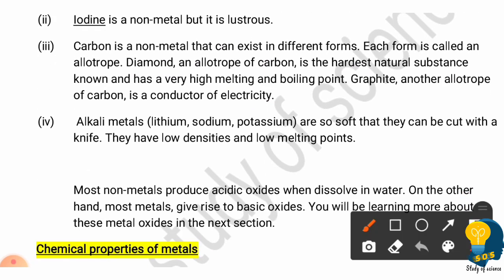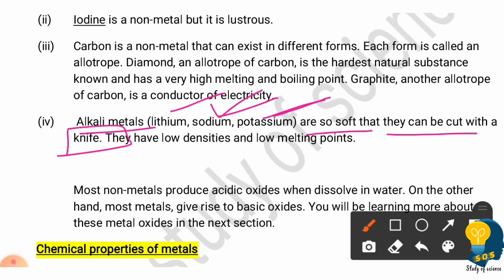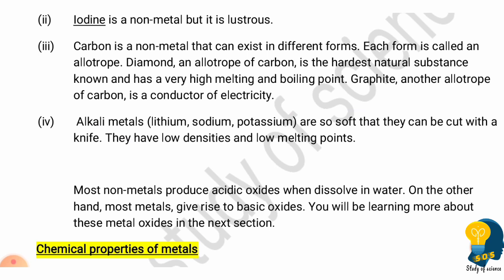Moving to the last point of the exceptions: alkali metals such as lithium, sodium, and potassium are so soft they can be cut with a knife. Sodium, being a metal, should be hard in nature, but it is a soft metal. These alkali metals also have low densities and low melting points.